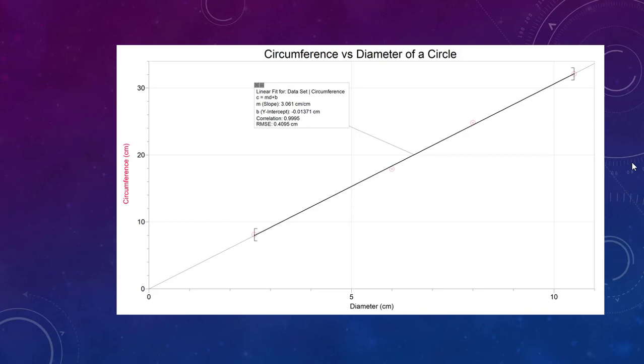Another term we use is direct. So linear, constant, and direct are all correct ways to describe this relationship because we have a straight line on our graph.